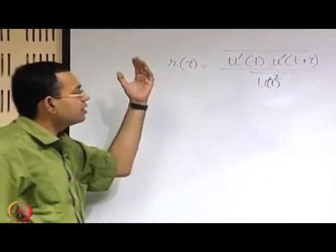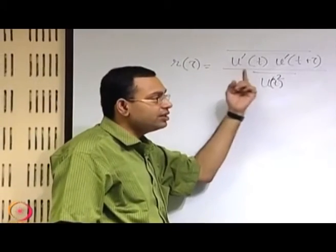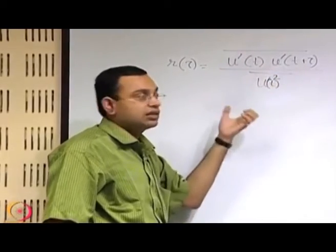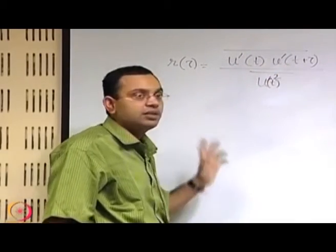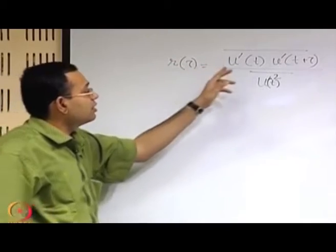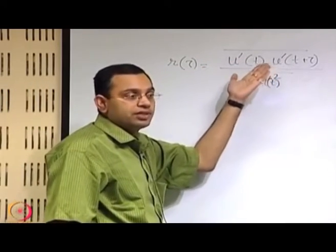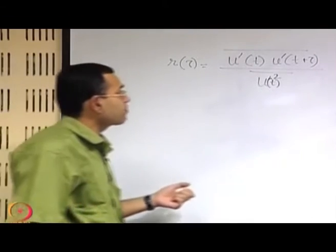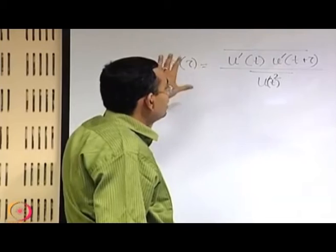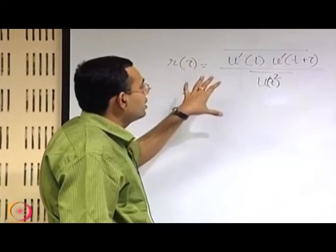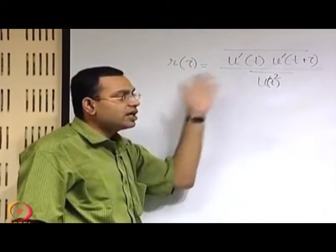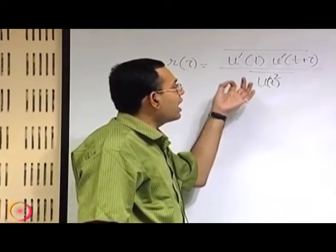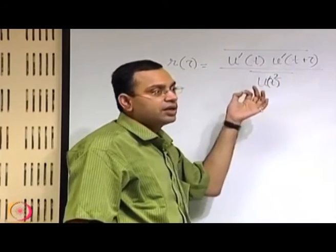It is based on the correlation between the outcome of the same random variable just at different conditions: one is at t, another is at t plus tau, and the random variable is u prime, which is the fluctuation component of velocity along x. This indicates how strongly the outcome of the random experiment in terms of u prime at a given point at two different instances of time are correlated.